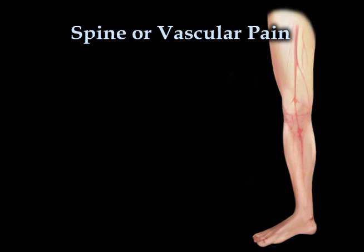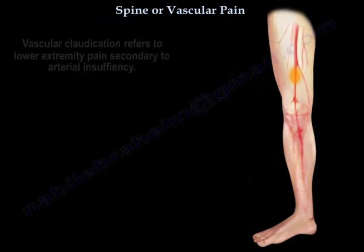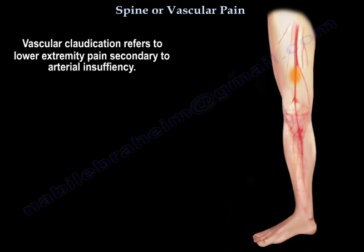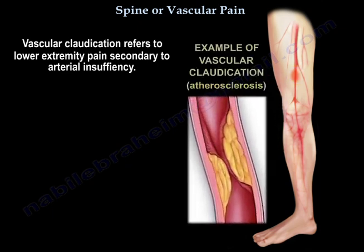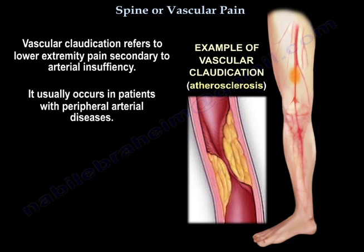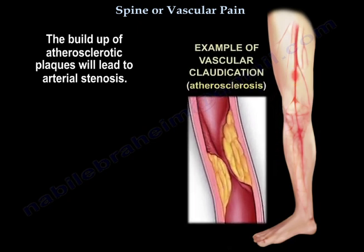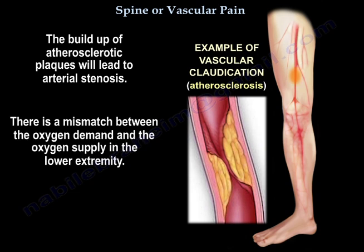Vascular claudication refers to lower extremity pain secondary to arterial insufficiency. It usually occurs in patients with peripheral arterial diseases. The buildup of atherosclerotic plaques will lead to arterial stenosis, creating a mismatch between the oxygen demand and the oxygen supply in the lower extremity.